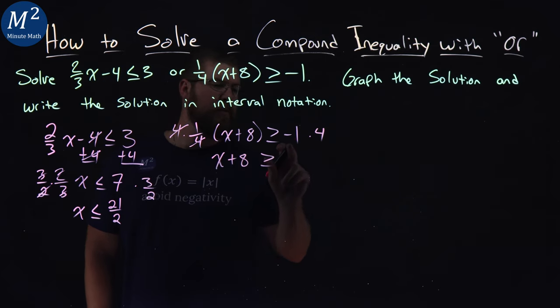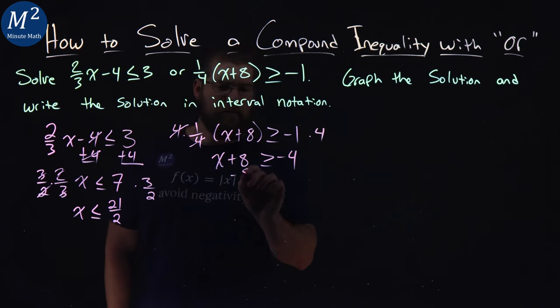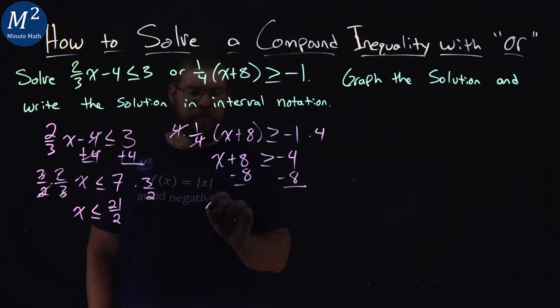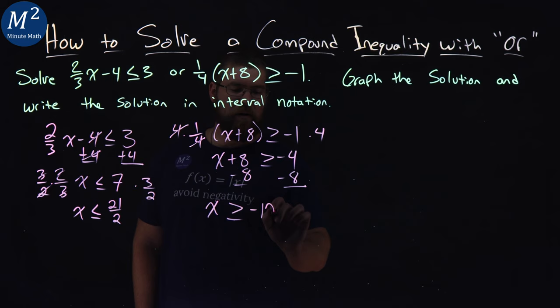It is greater than or equal to negative 1 times 4 is negative 4. I subtract 8 from both sides, and we have x by itself. It's greater than or equal to negative 4 minus 8 is negative 12.